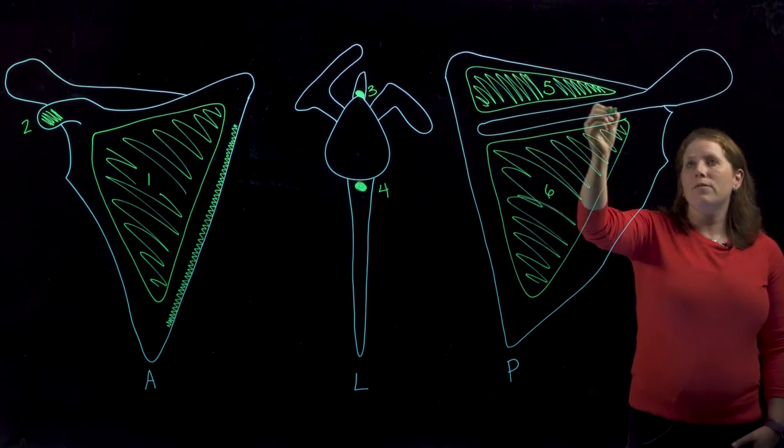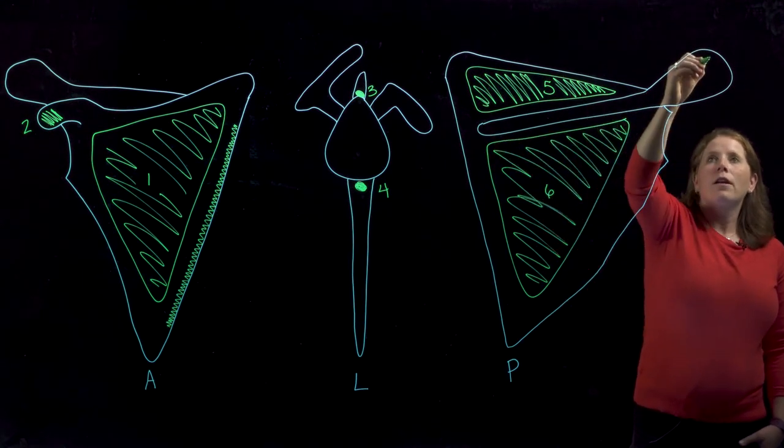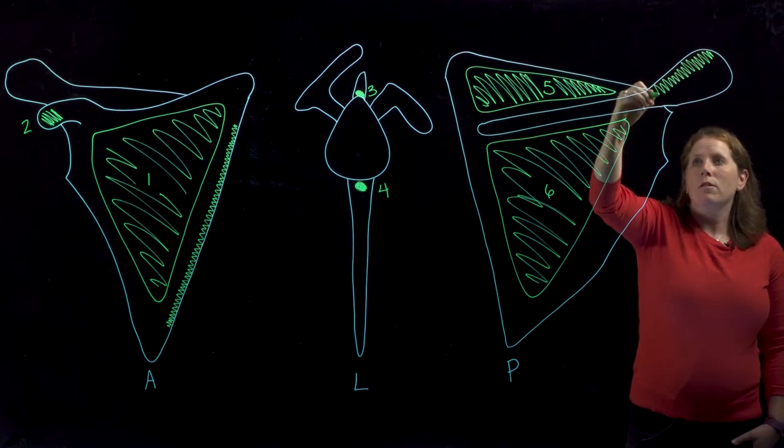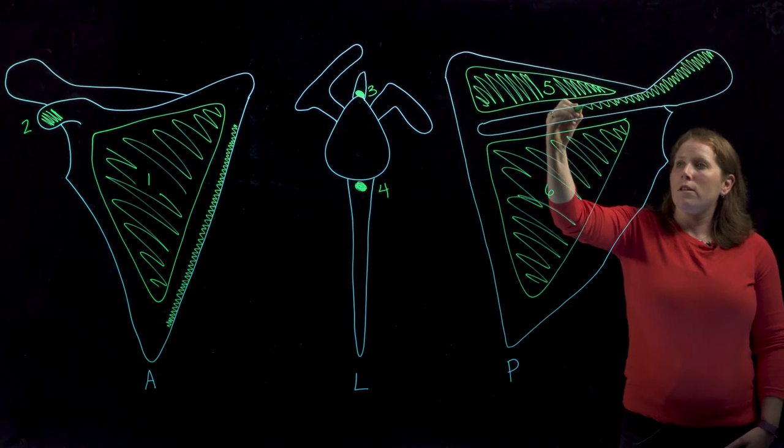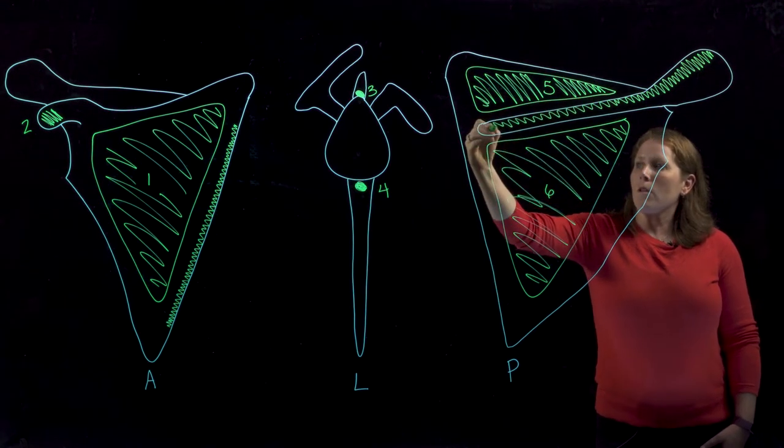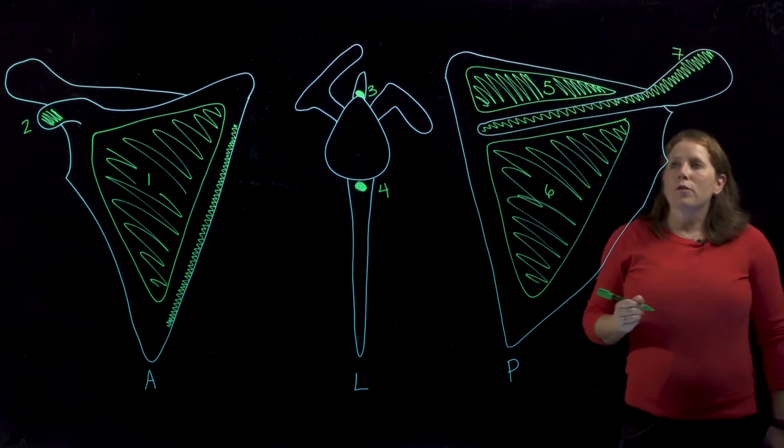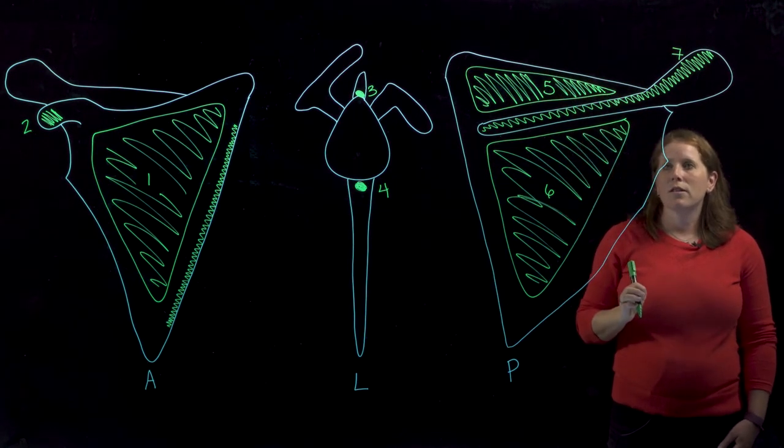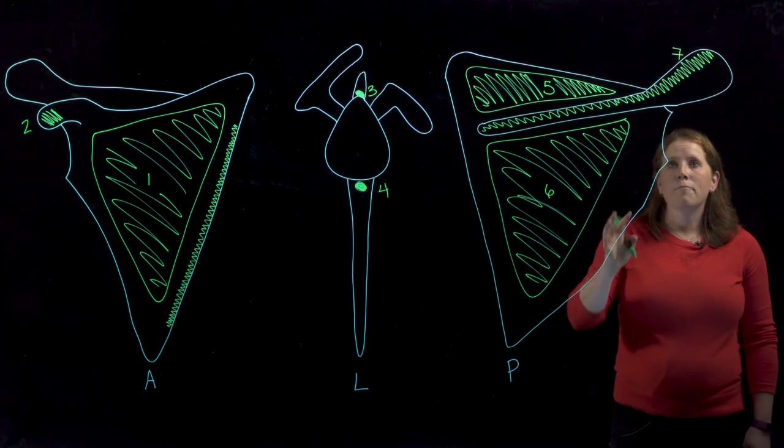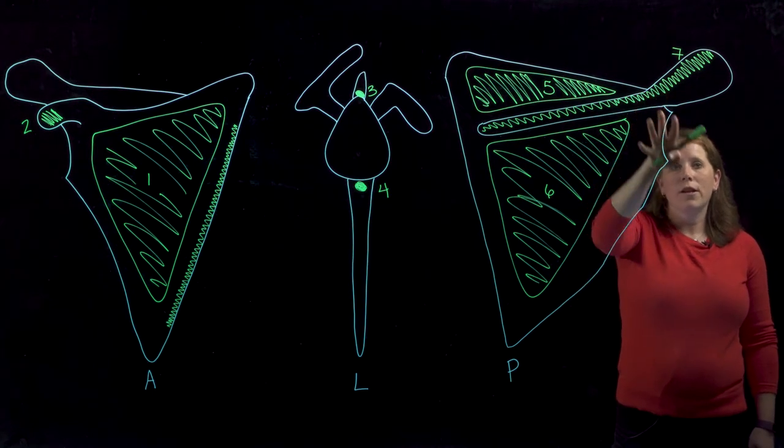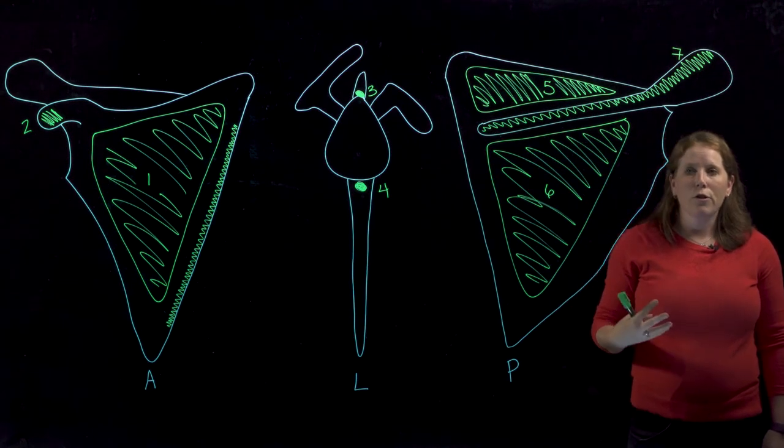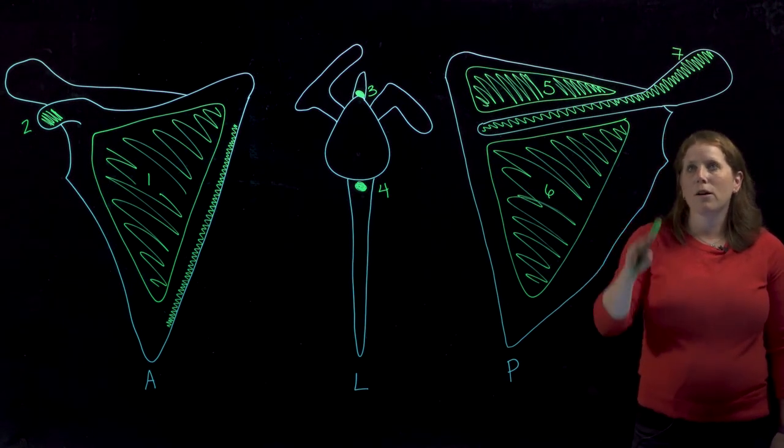They actually also attach to the clavicle as well, but that's not in this diagram. So we'll color this in and label it number seven. The first muscle here actually comes from above and inserts onto that surface, and that's trapezius. And the second muscle originates here and ends up traveling towards the humerus, and that's going to be deltoid. So again, you can remember those muscles in a pair because they share this one common attachment site.